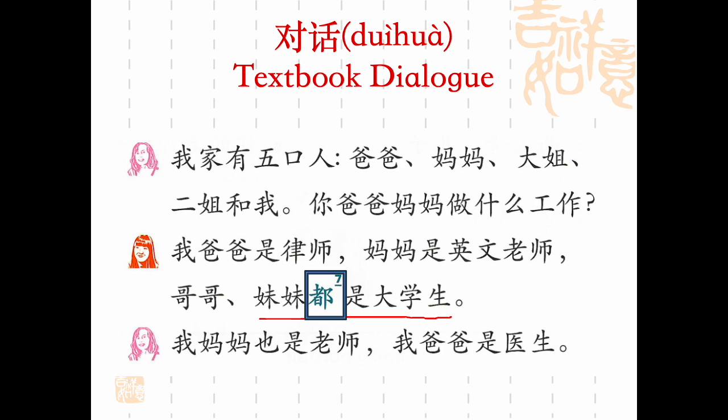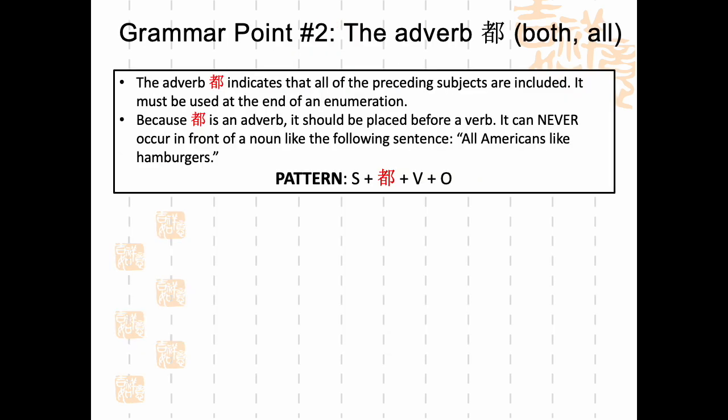The adverb 都 means both and all. It indicates that all the preceding subjects — however many come before it — are all included. Because 都 is an adverb, it's always placed before the verb. Whenever you have an adverb, you can always remember this rule: it always comes before the verb.